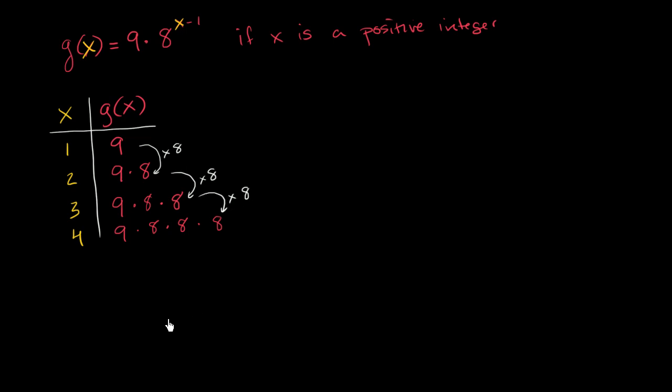So let's define that as a recursive function. So first, we'll define our base case. So we could say g of x is going to be equal to 9 if x is equal to 1. g of x equals 9 if x equals 1. So that took care of that right over there.